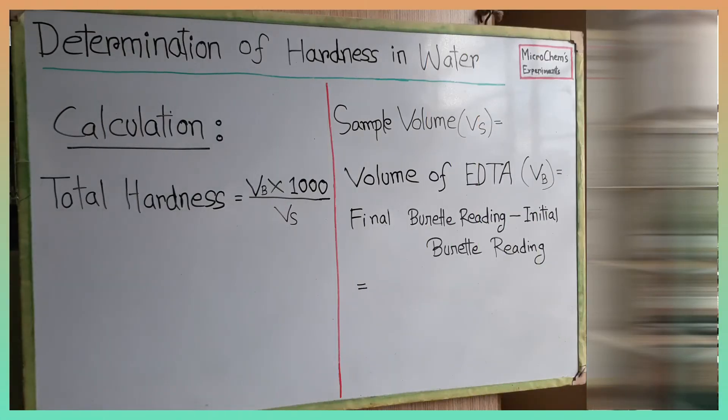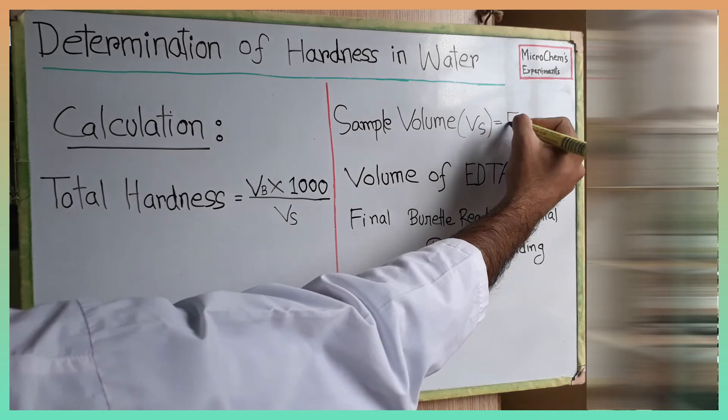Let's put values in the right side of the board. Sample volume Vs is 50 ml.